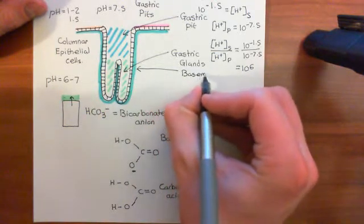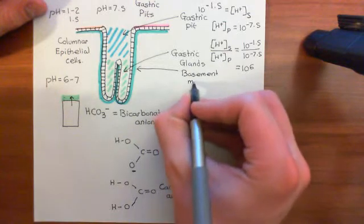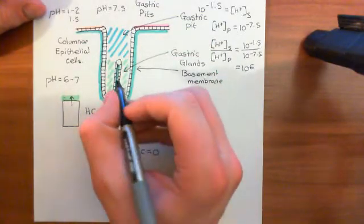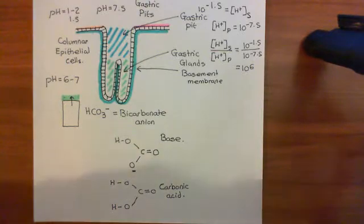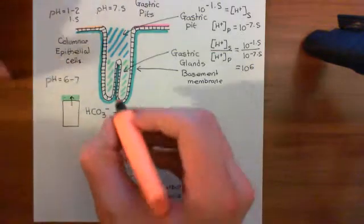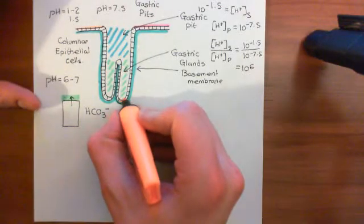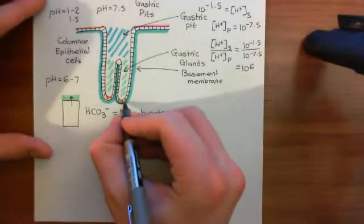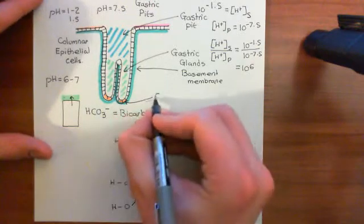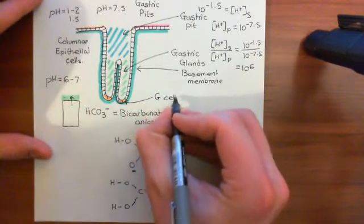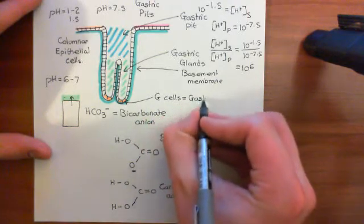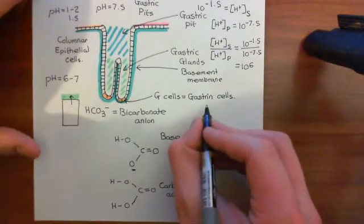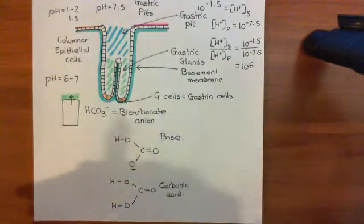There are some special cells that are in amongst the epithelial cells in these gastric pits and gastric glands in particular. Right at the base of these gastric glands, you have a special type of cell known as a G cell — highlighted in orange. G cells stands for gastrin cells, and these are cells which will release gastrin. We'll see the purpose of gastrin later on.